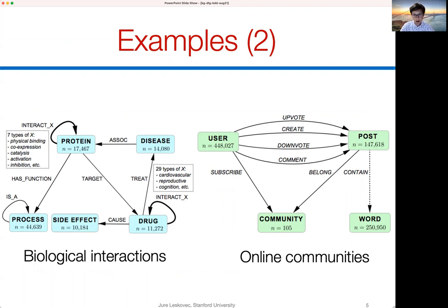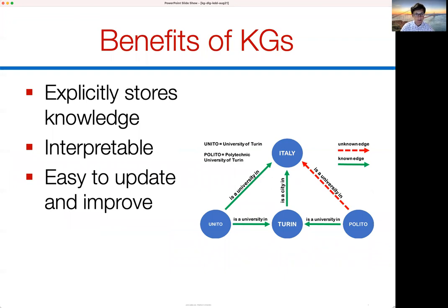We can even think of online communities — for example Reddit — as a heterogeneous graph relating users, their votes, posts, communities, and words. The point is that we can take heterogeneous data and represent it as a knowledge graph. The benefits are that knowledge graphs explicitly store knowledge, they are interpretable, and they are easy to update over time.